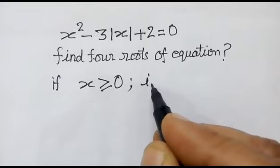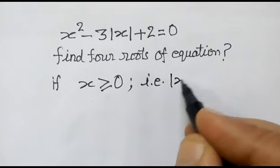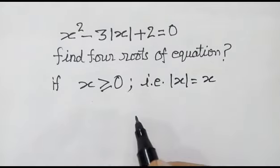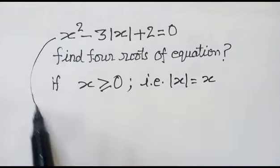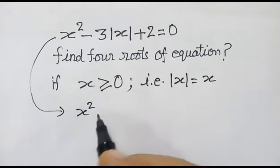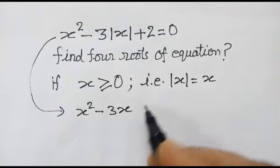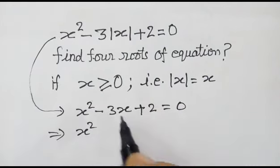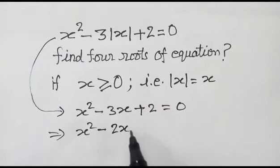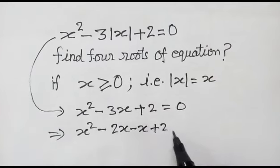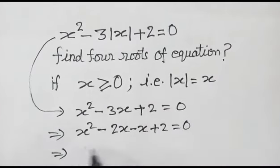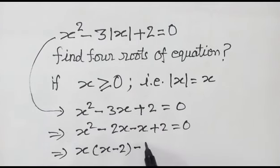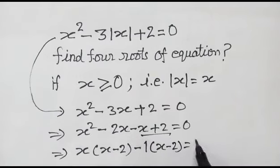If x is greater than or equal to 0, then mod of x is equal to x. Therefore the equation becomes x squared minus 3x plus 2 is equal to 0. Now x squared minus 3x can be written as minus 2x minus x plus 2 is equal to 0. Taking x as common we get x times (x minus 2).